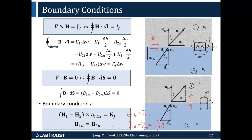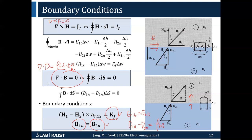A similar thing applies here. From these relations: B1_normal = B2_normal is the continuity condition, and H1_tangential minus H2_tangential equals K_f, the surface free current. The key difference between B and D fields is that divergence of D = rho_f was non-zero in electrostatics, whereas divergence of B = 0. And curl of E = 0 in electrostatics while curl of H is non-zero, which creates this difference.